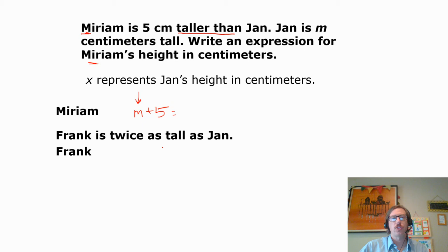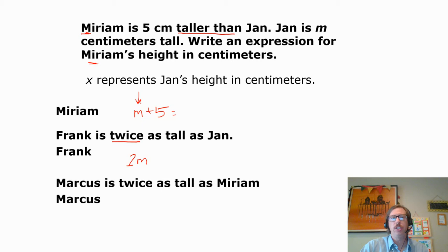Here, Frank is twice as tall as Jan. Well, what if we combine that? So we have Jan's height is M already. How are we going to put Frank? Well, Frank has to be twice as tall. That's going to be 2M. How about Marcus is twice as tall as Miriam's? That means we could use the information from Miriam and make it twice as tall. We would use parentheses here. 2 times the quantity M plus 5.